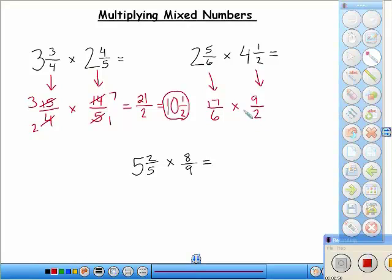So let's see if we can cross-cancel. Can I cross-cancel? Does anything go into 17 and 2? No, unfortunately not. How about 6 and 9? That will work. Both of those can be divided by 3. 9 divided by 3 is 3. 6 divided by 3 is 2.